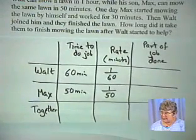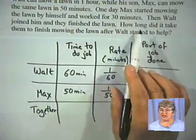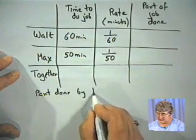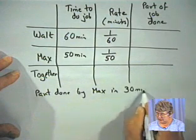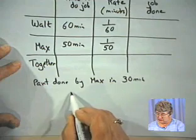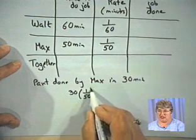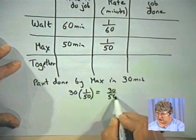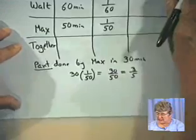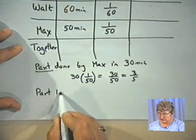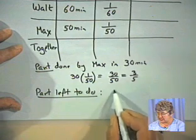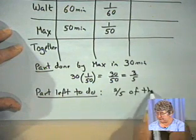There's a complication here, and that is that Max starts to do the lawn by himself, and he works 30 minutes. The part done by Max in 30 minutes... Notice that Max's rate is 1/50th, so we have 30 minutes times 1/50th. Well, multiplying fractions, we have 30/50ths, and when we simplify, we end up with 3/5ths. So the part of the job done by Max is 3/5ths of the job. The part that's left to do... if the whole job is 5/5ths and 3/5ths is done, what's left to do is 2/5ths of the job.